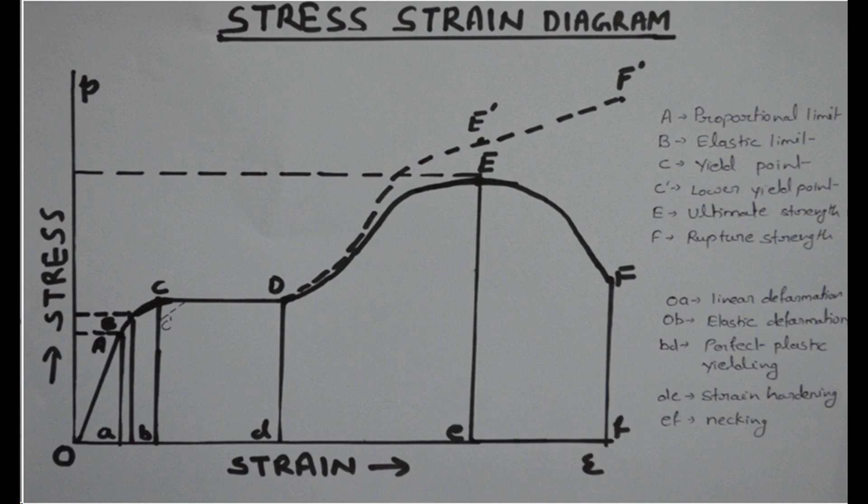If we increase the load further after point B the yielding takes place. So point C, you can see the point C is the point of sudden large extension. A point where the sudden large extension happen is known as the yield point.